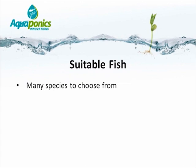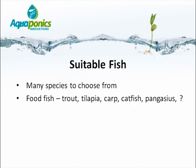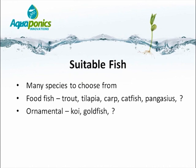There are many suitable fish species to choose from. For food fish purposes, you could be farming trout, tilapia, carp, catfish, or possibly pangasius. For ornamental use, it could be koi, goldfish, or other ornamental species. Bear in mind that ornamental fish are generally stocked at much lower densities to protect their fins and body color, resulting in far lower nutrient levels than is ideal for plants in an aquaponics environment.